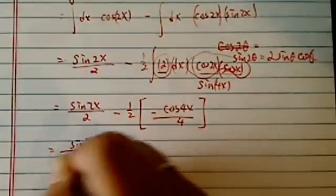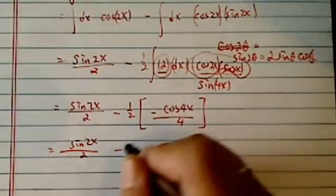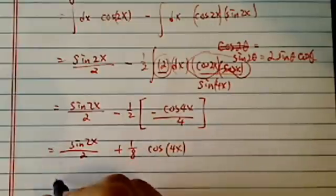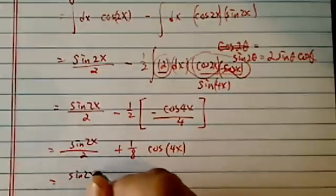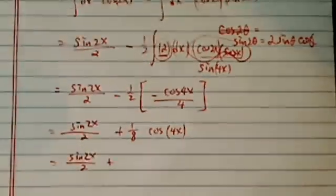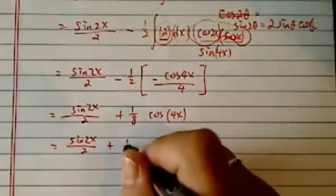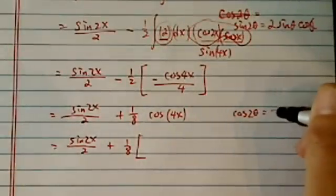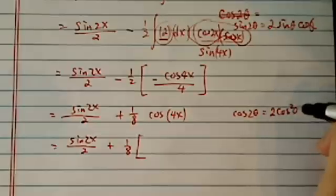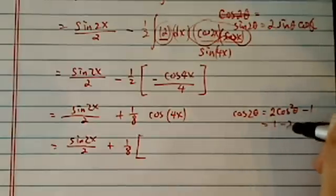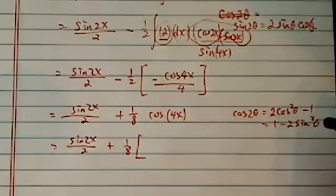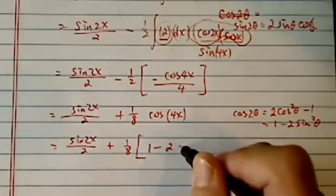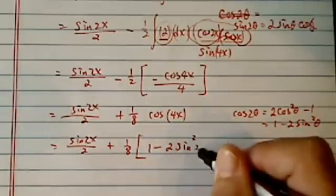Let's simplify a little bit to this is a plus 1 eighth cosine of 4x. Now if you're so inclined to do, we can get everything into sine. So we have 1 eighth cosine of 2 theta is equal to twice cosine squared theta minus 1. It's also equal to 1 minus twice sine squared of theta. So let's use the latter one. 1 minus twice sine squared of 2x.